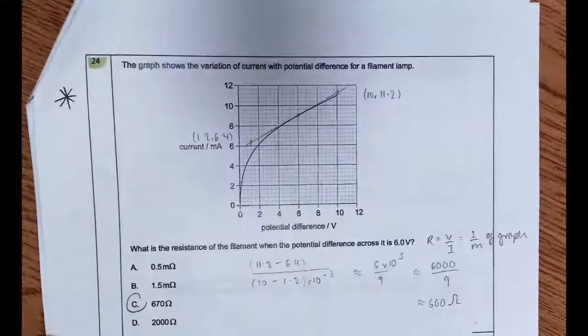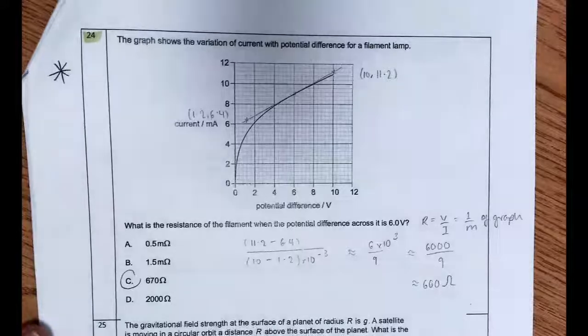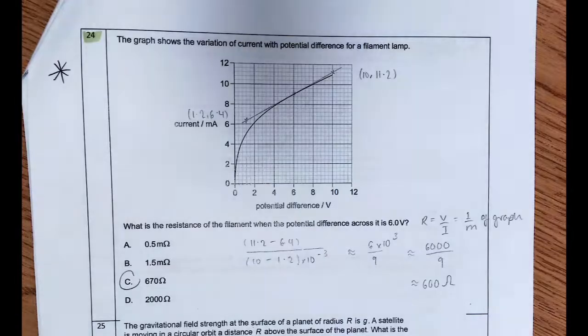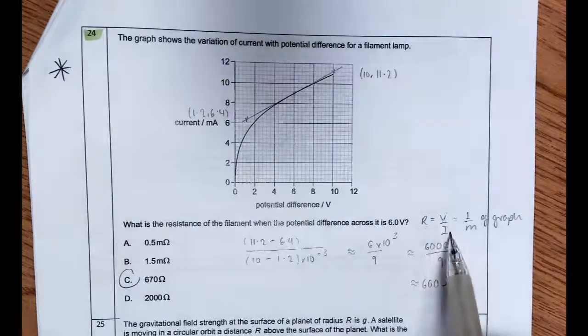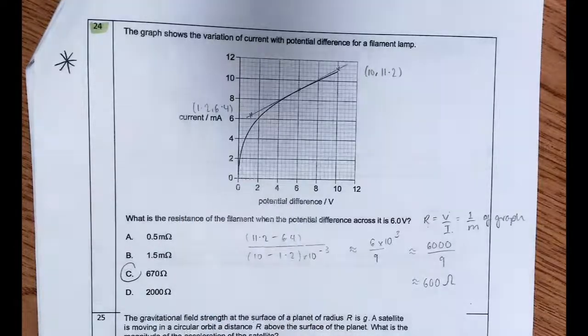Question 24. You've got the graph showing the variation of current with potential difference voltage, and then it asks for the resistance of the filament when the potential difference across it is 6 volts. Now obviously we know that resistance is voltage over current. We have current over voltage, so the gradient is 1 over resistance in this case.